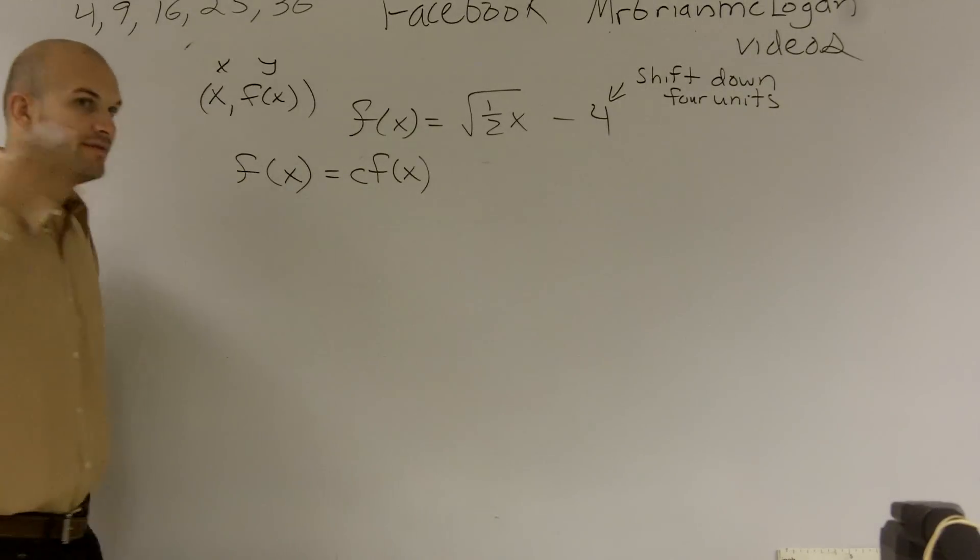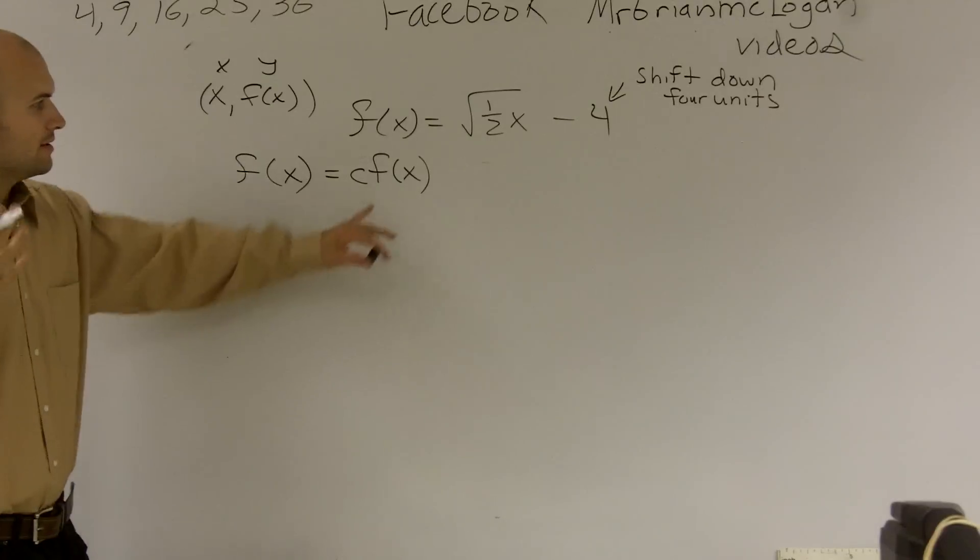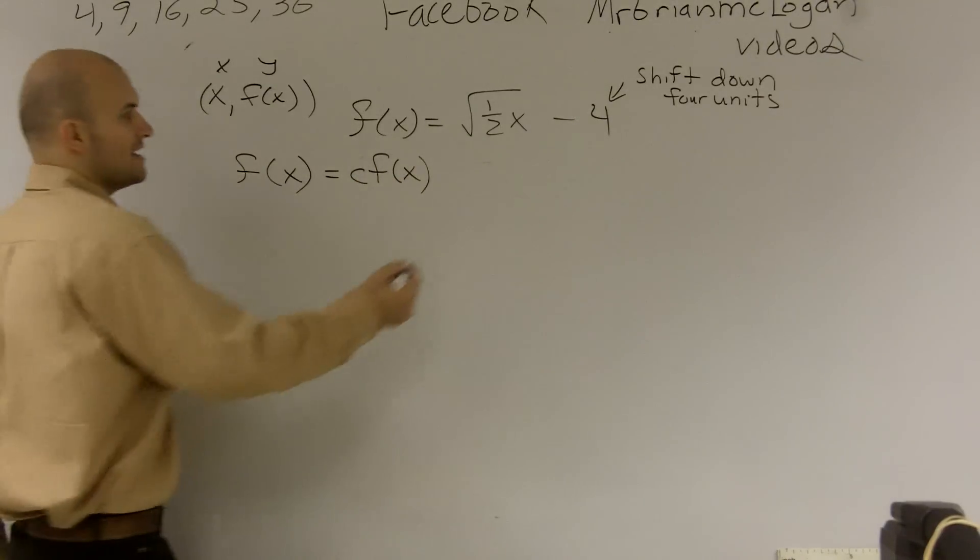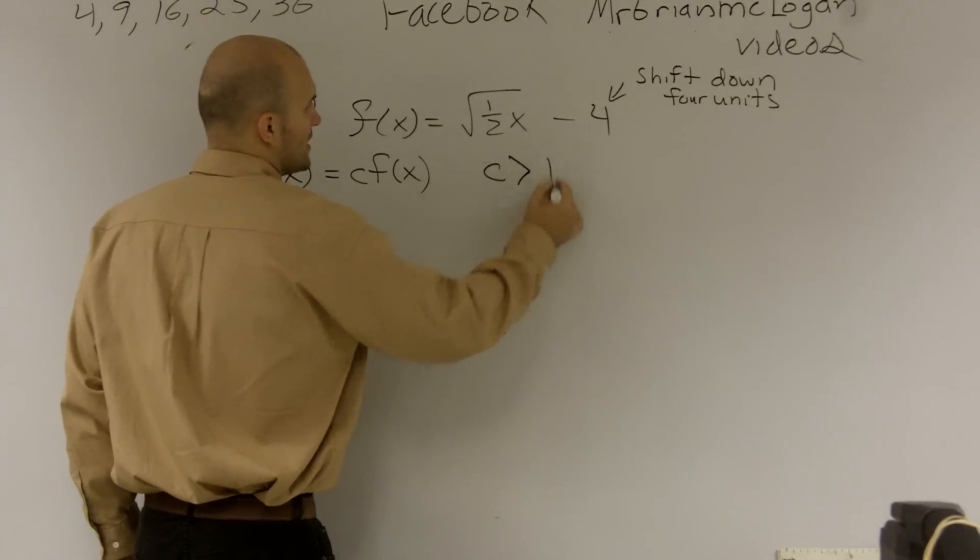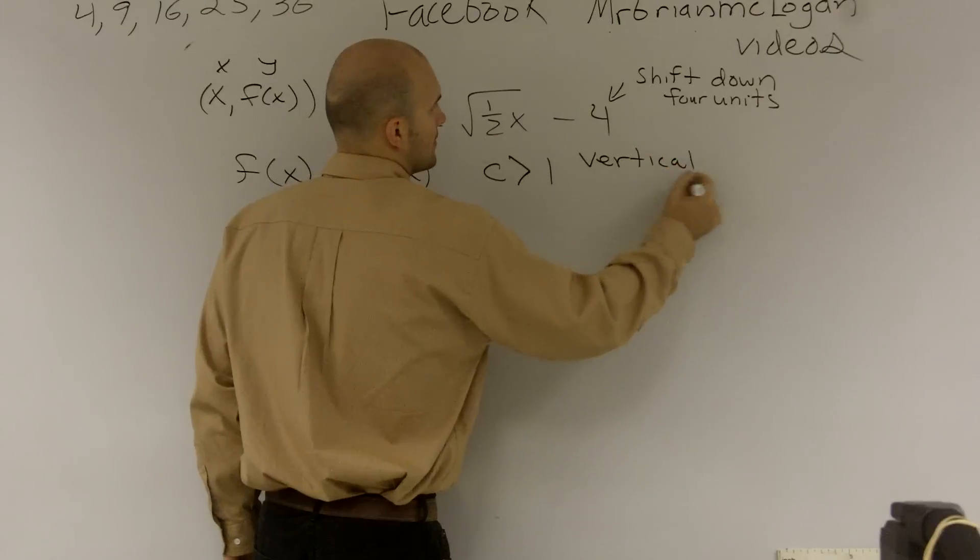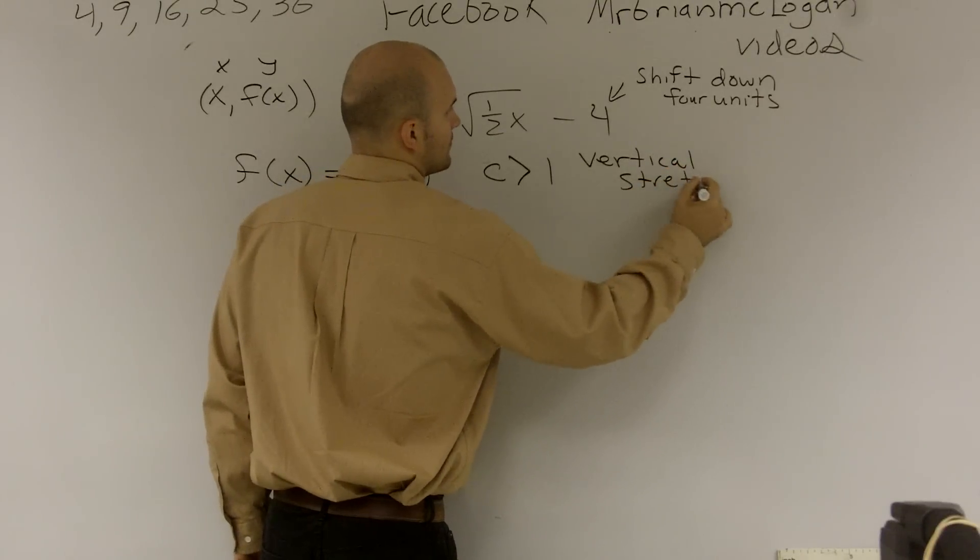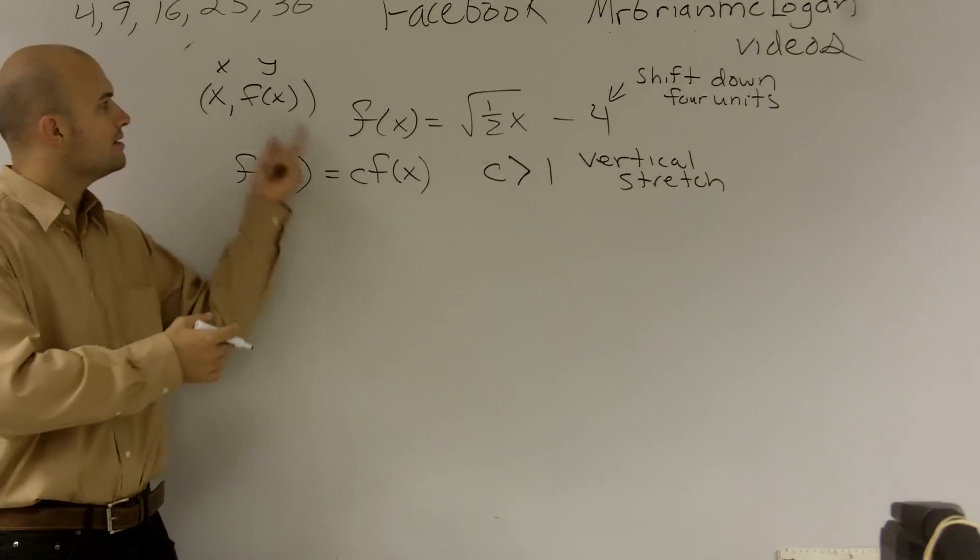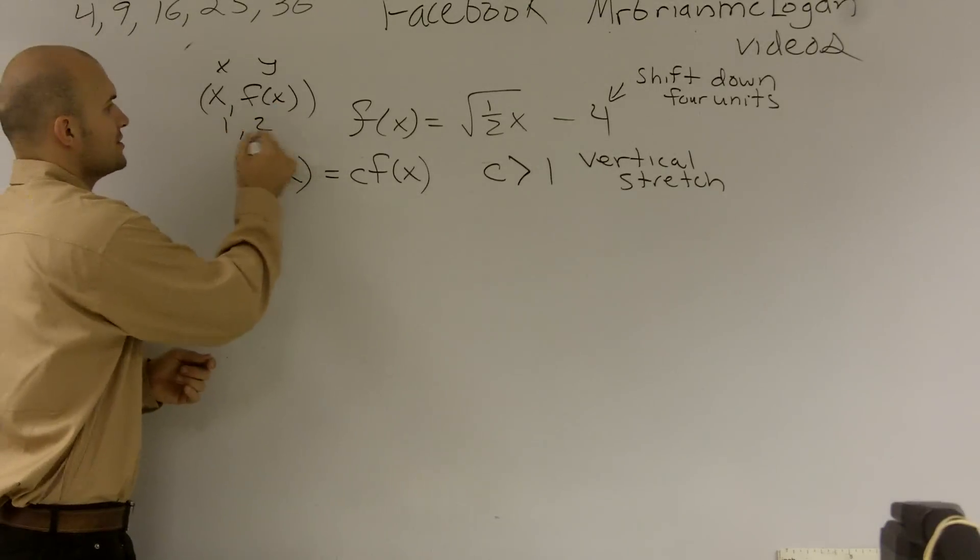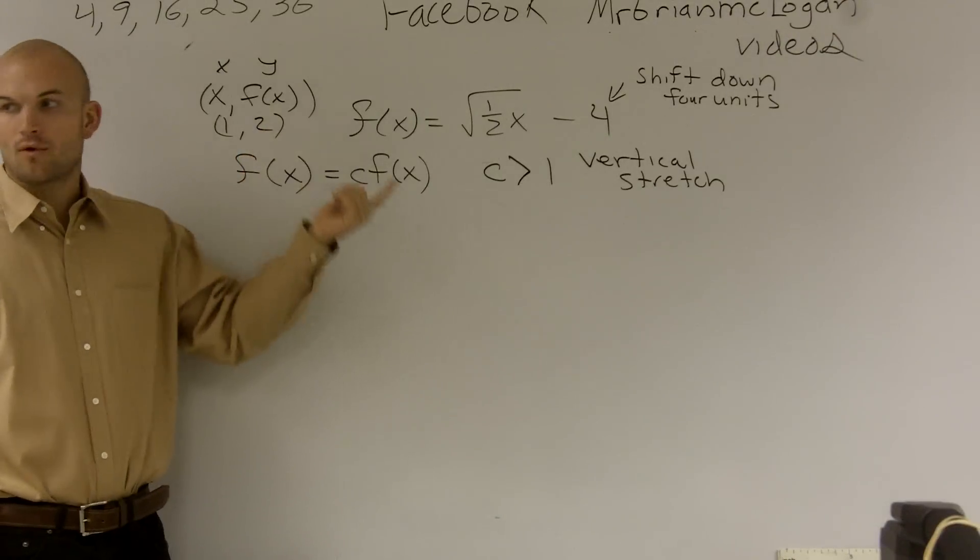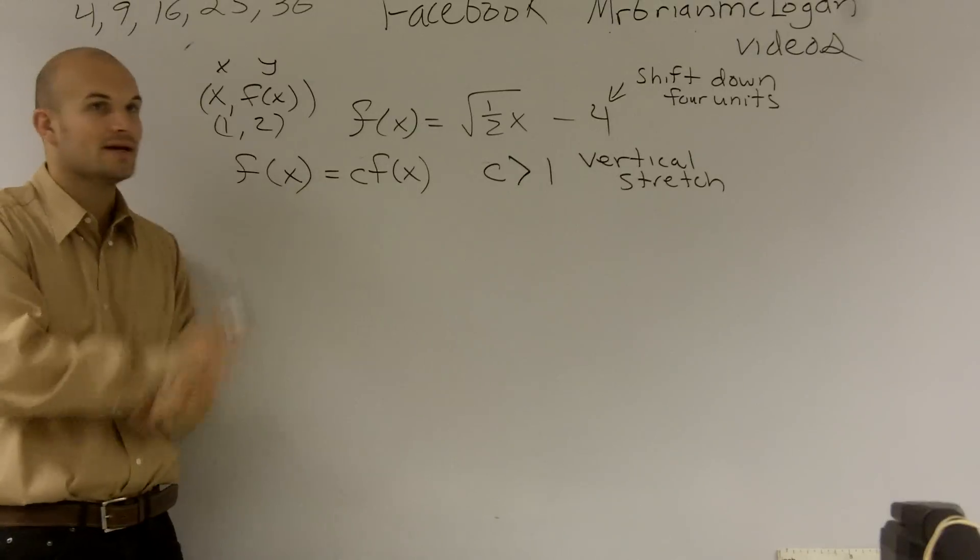So when you're looking at the graph, I don't even know what the graph looks like at this point. You know that now if I'm multiplying it by a number, if that number is greater than 1, it's going to be a vertical stretch. So if I multiply it by 2, think about, let's say your point is 1 comma 2. Well, if I multiply 2 times 2, now it's going to be 1 comma 4. Right? You're stretching it. Whatever you multiply by, it's just going to be your multiplier.